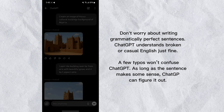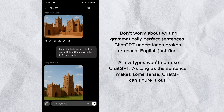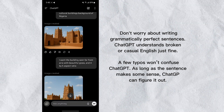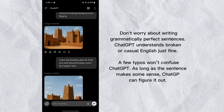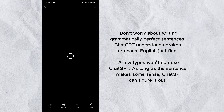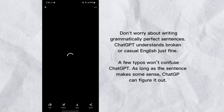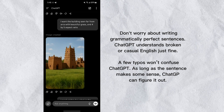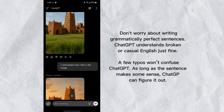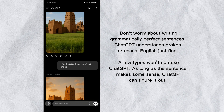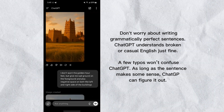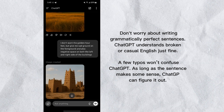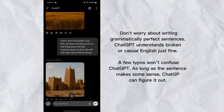This is the result I got at first and I felt it wasn't good enough, so I gave it a second prompt: 'I want the building scene far from the area with beautiful grass and a four-by-five aspect ratio.' It gave me the next result. I still needed some changes, so I asked it to add a golden hour feel to the image, and it generated this result.